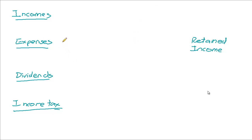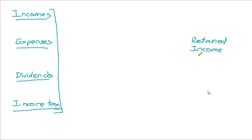Now, this seems like it should be a fairly simple process. You simply take the amount of all your incomes and put them into retained income. Incomes will mostly be credits, so you'll take all your credits and put them on the credit side of retained income. Same with expenses — mostly debits — put them on the debit side of retained income, and you've included all your incomes, expenses and dividends in the retained income. Not so. In accounting, we like to add steps and intermediate steps.